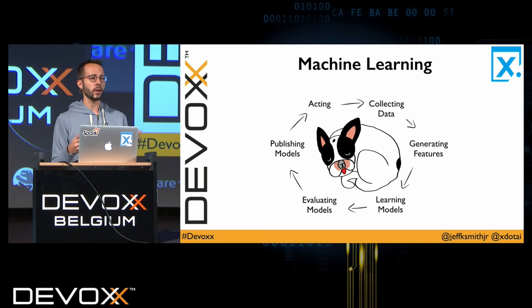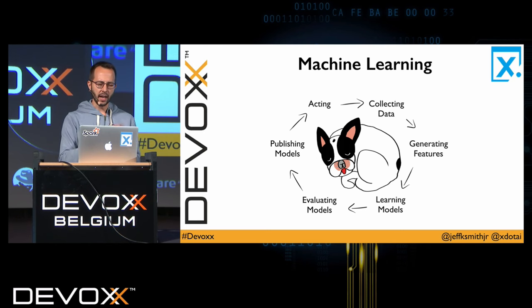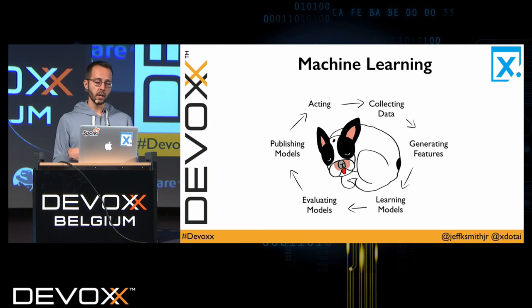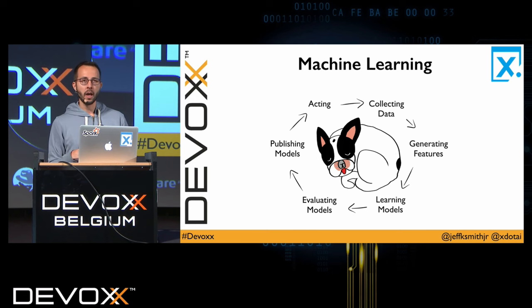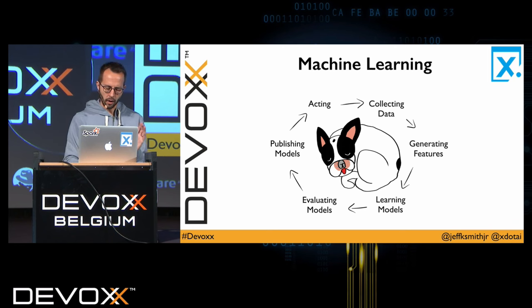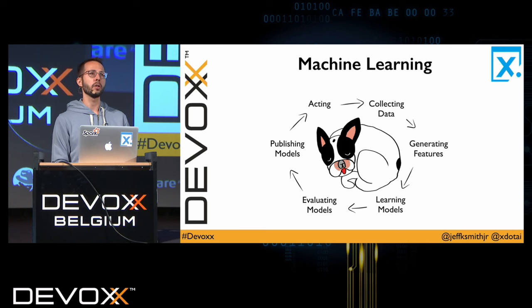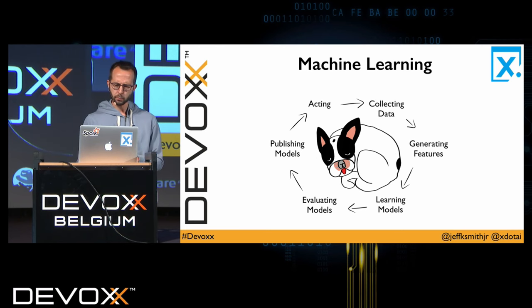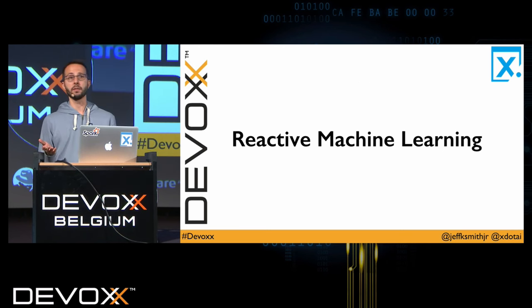I think of machine learning as going in a cycle: we collect data, generate features, learn models, evaluate those models, publish them for use, and then act upon them. These are rough guidelines of the steps we might take. I'll show you a couple of pieces of this lifecycle, though we won't work through the whole picture. That's my view on what we're going to call machine learning for this talk.